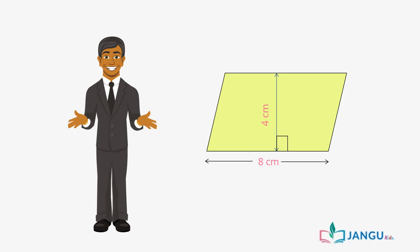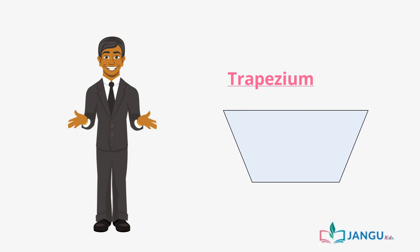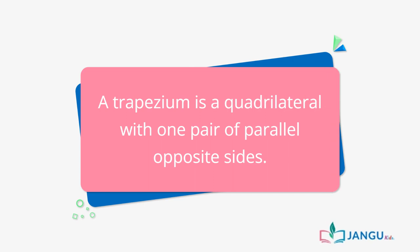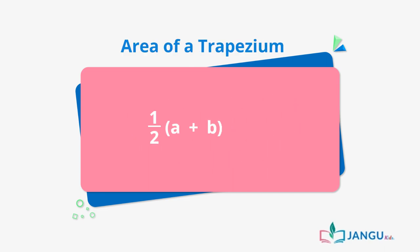And that shows how easy it is to calculate the area of a parallelogram with known height and length. The next shape we'll be learning how to calculate its area is the trapezium. As we have learned in our previous lessons on plane shapes, a trapezium is a quadrilateral with one pair of parallel opposite sides. The formula for calculating its area is half times (A plus B) times H, where A is the length on one side of the trapezium, B is the length on the opposite side, and H is the height of the trapezium.